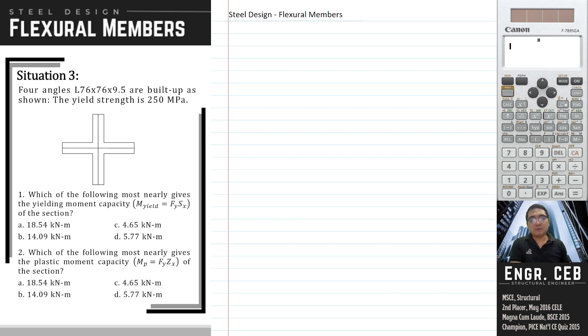The formula for the yielding moment capacity is simply Fy times Sx. Sx is the elastic section modulus that we can compute based on the section property of the given section.